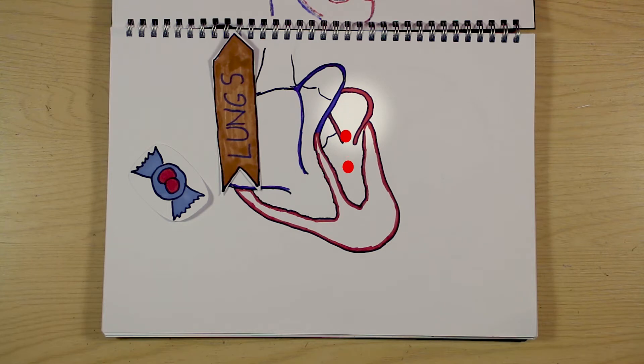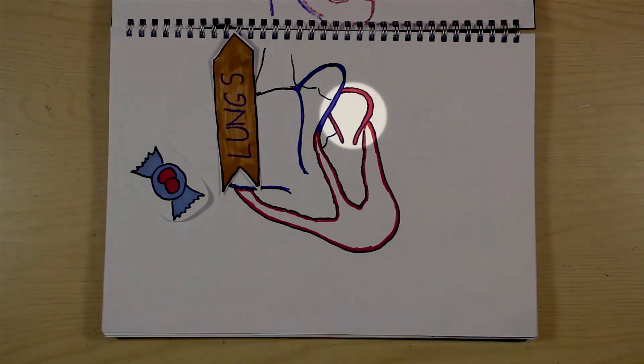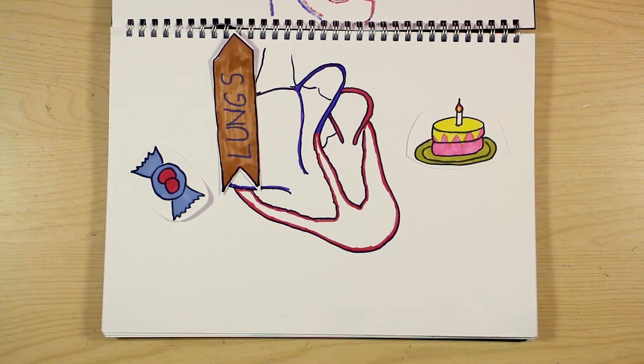A nice, relaxed ventricle accepts the blood with open arms, but sometimes the atrium has to work hard to push blood into a stiffened ventricle. The stiffening might be due to high blood pressure, damage from a previous heart attack, or just too many birthdays.